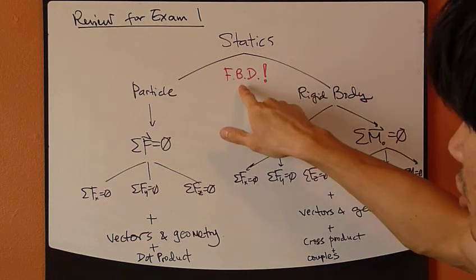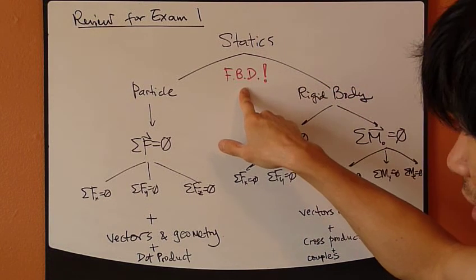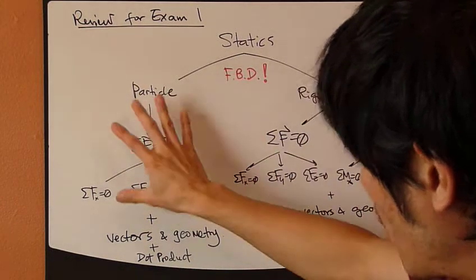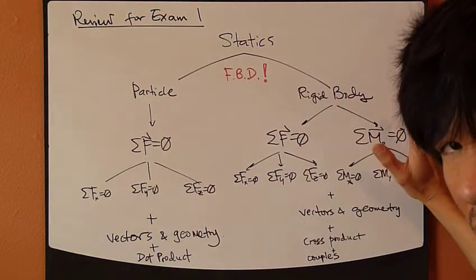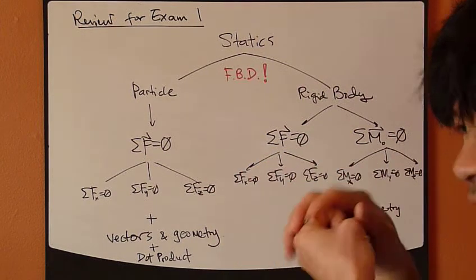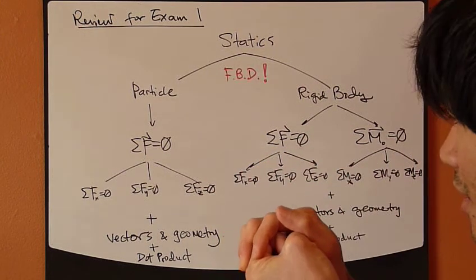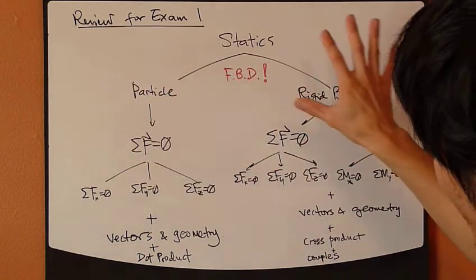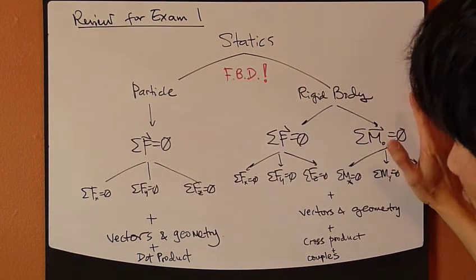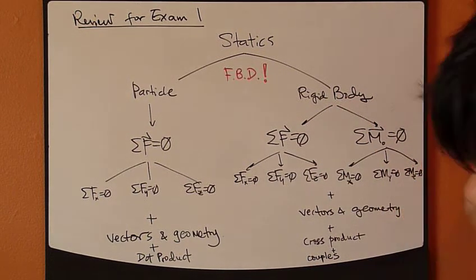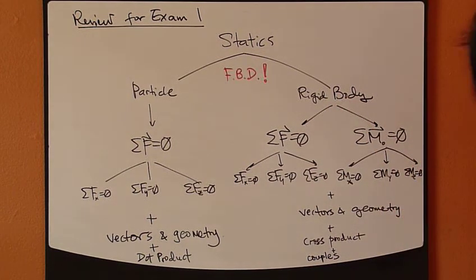And then, think about whether it's particle or rigid body. Whether there's rotation, or the tendency to want to rotate or not. If not, then it's particle. If so, then it's rigid body. And then, just develop equations there. And that's it.